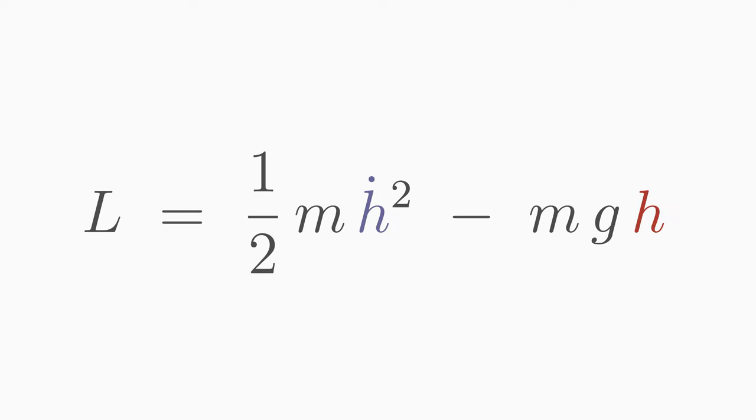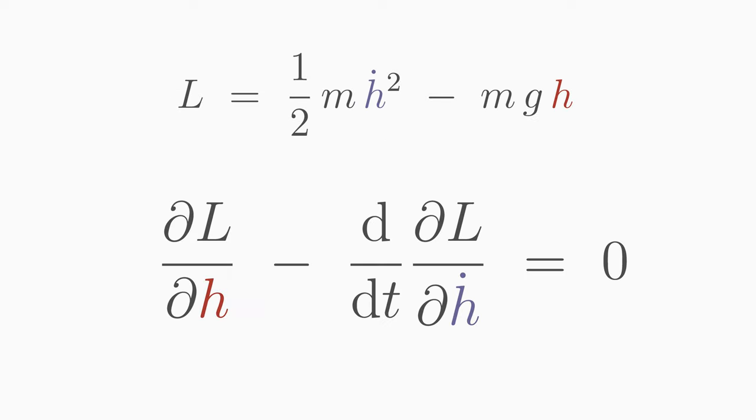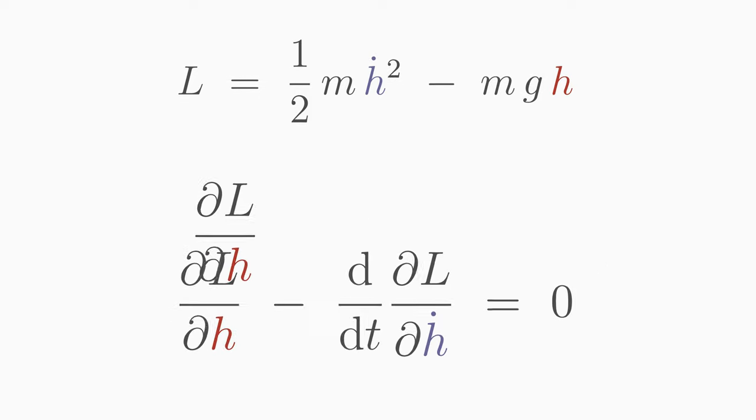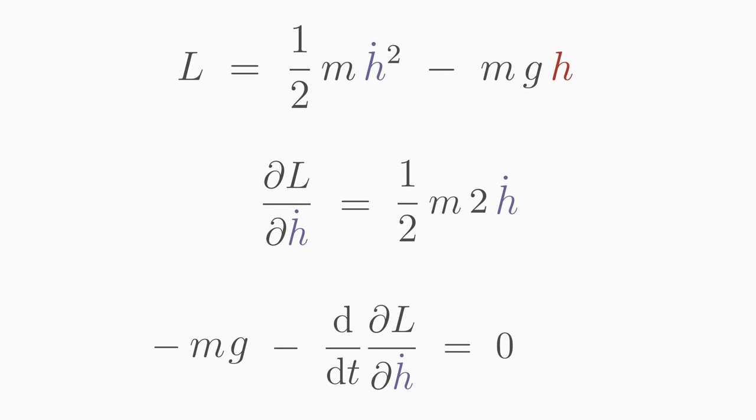Step number three: Insert the determined Lagrange function into the Euler-Lagrange equation and calculate the derivatives. The partial derivative of L with respect to h is minus m times g. The partial derivative of L with respect to h dot is m h dot.